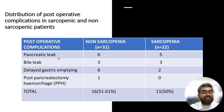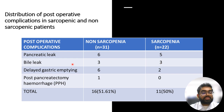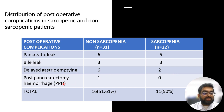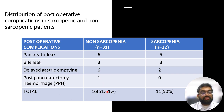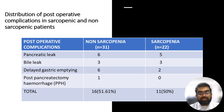Post-operative complications such as pancreatic leak occurred in 6 non-sarcopenic and 5 sarcopenic patients. Bile leak occurred in 3 non-sarcopenic and 3 sarcopenic patients. Delayed gastric emptying occurred in 6 non-sarcopenic and 2 sarcopenic patients. Post-pancreatectomy hemorrhage occurred in 1 non-sarcopenic patient. In total, 16 out of 31 non-sarcopenic patients and 11 out of 22 sarcopenic patients were affected by post-operative complications.